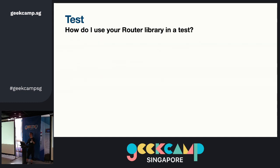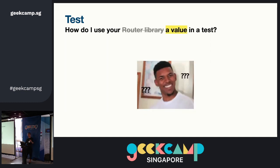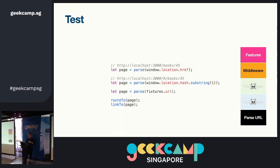There was an earlier question: how does my router library support tests? What configuration should I do to test with the router? But now in this new world — the dumb values world — this question becomes very stupid, because it's like: how do I use your value in a test? Because you just use values in tests. There's no question. I don't need a test helper from you — just give me the value.